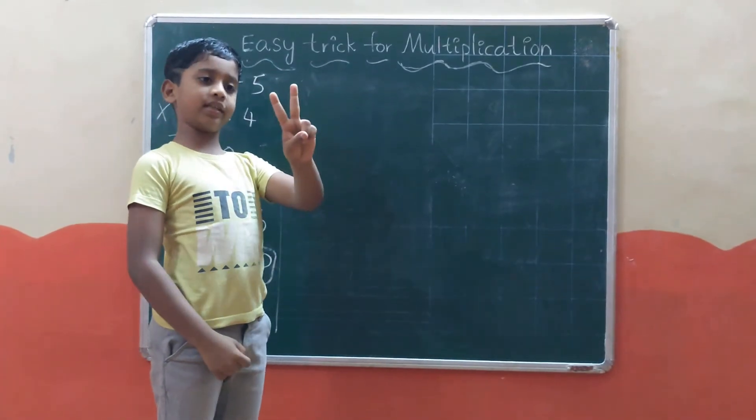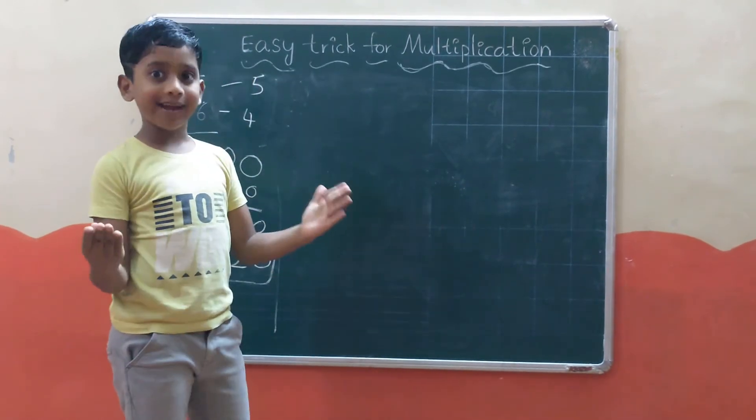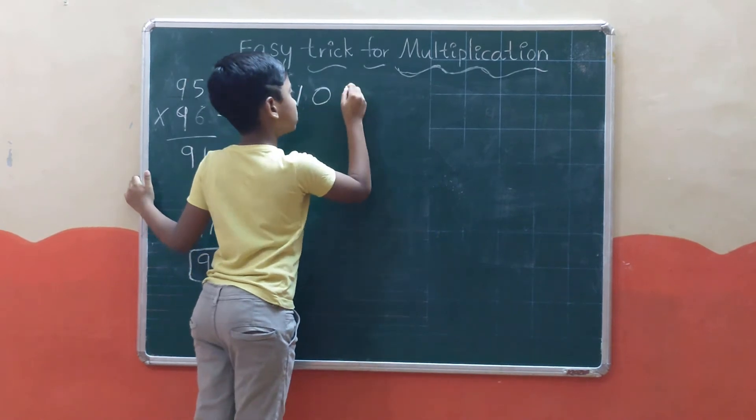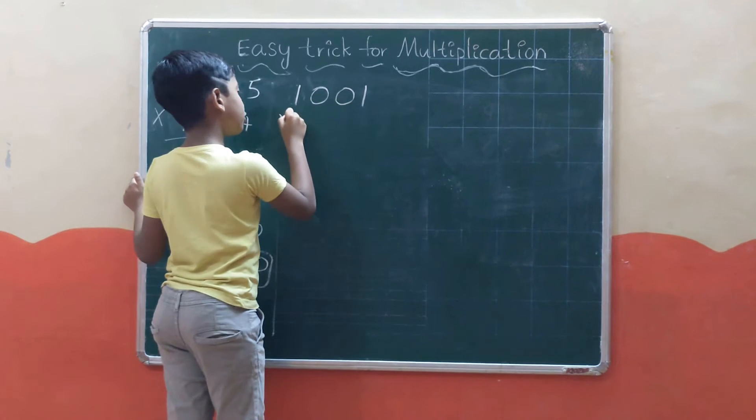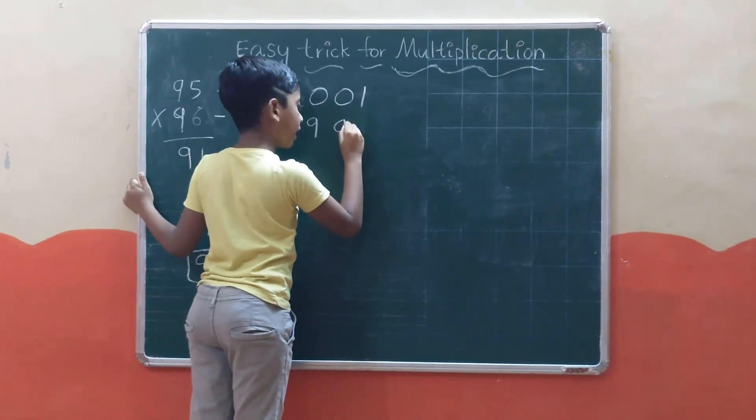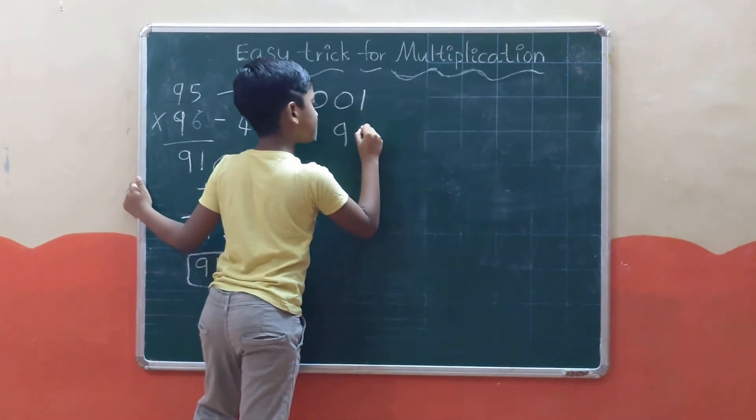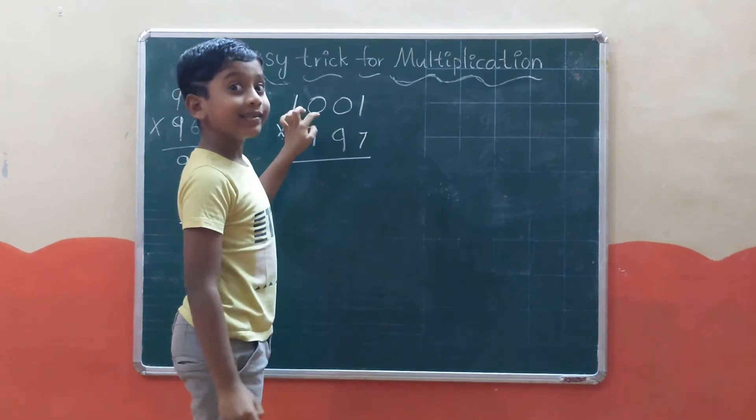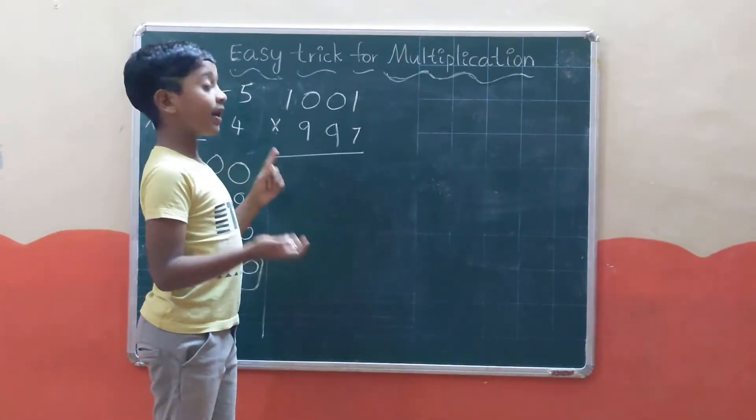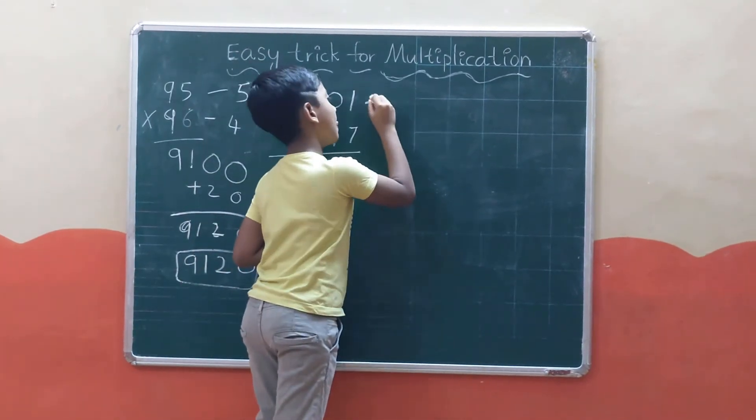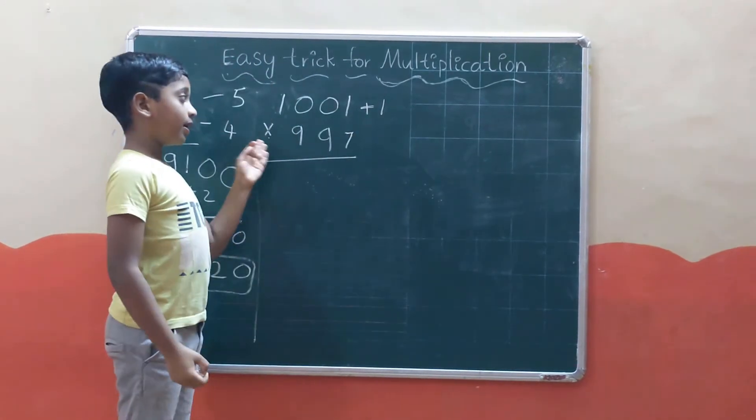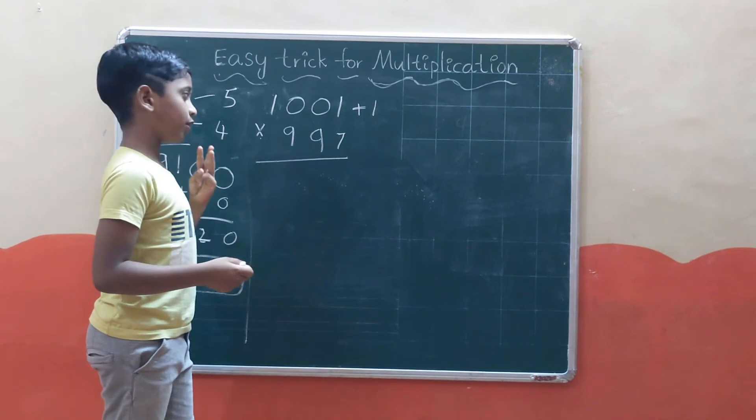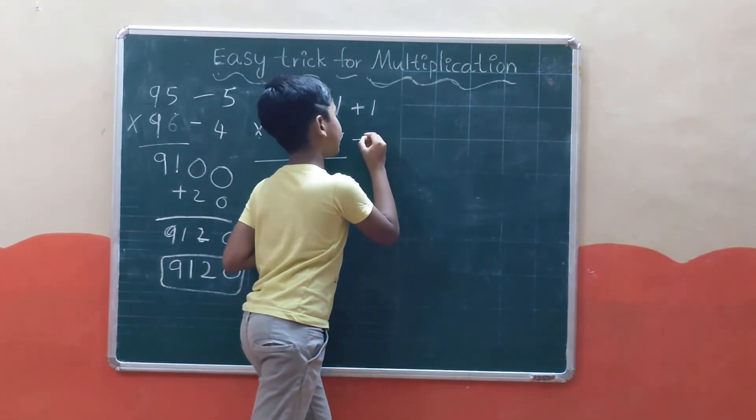Now I am going to take a second example in the thousands. 1001 times 997. This is more than 1000 by 1, so we write plus 1. This is less than 1000 by 3, so we write minus 3.